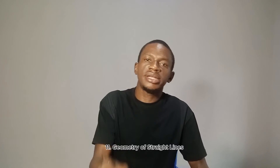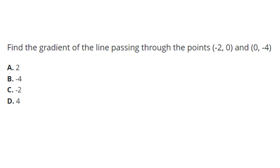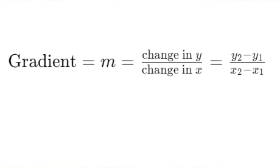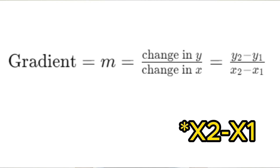Another topic you need to learn is geometry of straight lines. This is a very important topic. Please learn equations of a straight line. The distance between two points is very important — know how to find it and know the formula used. You should also be able to calculate the gradient of a line passing through two points, and don't forget that gradient is the same thing as slope. Whether slope or gradient is used in your question, they mean the same thing and have the same formula: gradient equals y2 minus y1 all over x2 minus x1. Know how to apply this formula.